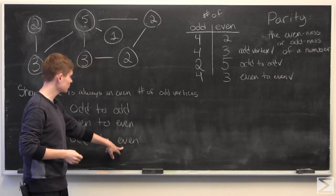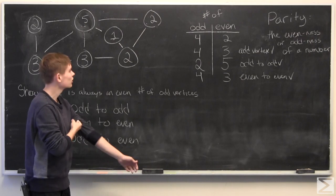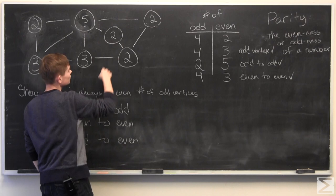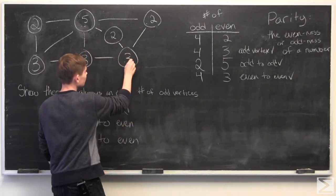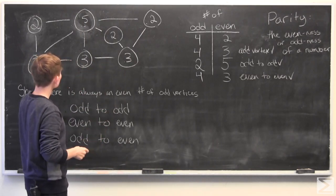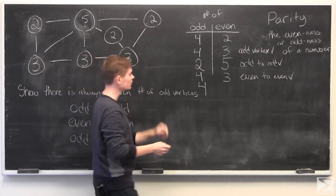And the last one is odd to even. So if we add an edge there, this one, since now there's two edges connecting to it, will become a two. And if we count them up, one, two, three, four, one, two, three even.